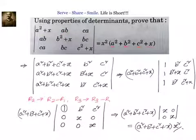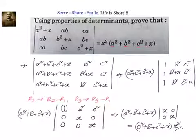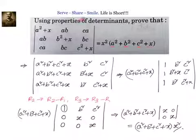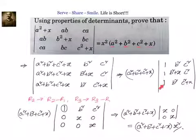To recap: we observed that a squared plus b squared plus c squared plus x needs to appear in the solution, and a squared plus x was already visible. We first multiplied the second and third columns by b/a and c/a to get b squared and c squared, then multiplied the second and third rows by a/b and a/c so all factors cancelled. Then we added columns to take the common factor out, got a column of 1s, performed row subtractions to get zeros, and expanded to get x squared as the final factor.